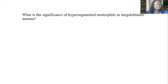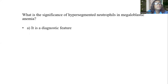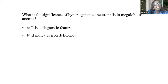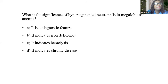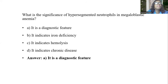What is the significance of hypersegmented neutrophils in megaloblastic anemia? A, it is a diagnostic feature. B, it indicates iron deficiency. C, it indicates hemolysis. D, it indicates chronic disease. The answer is A, it is a diagnostic feature of megaloblastic anemia. Hypersegmented neutrophils is a diagnostic feature of megaloblastic anemia.